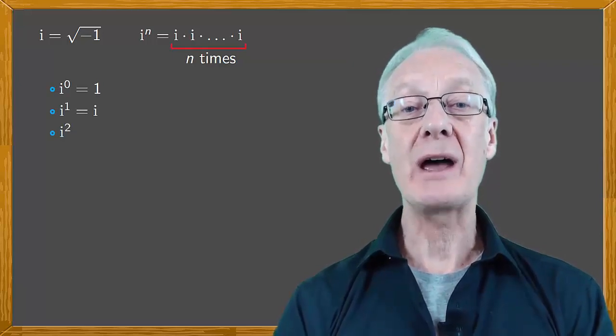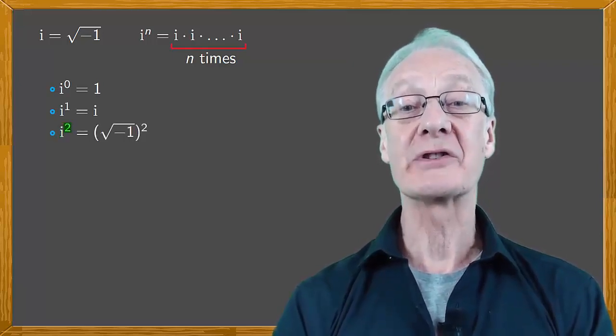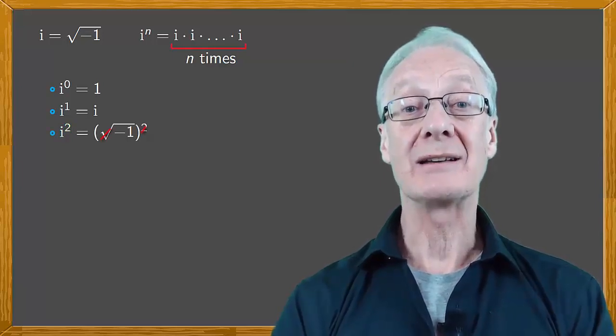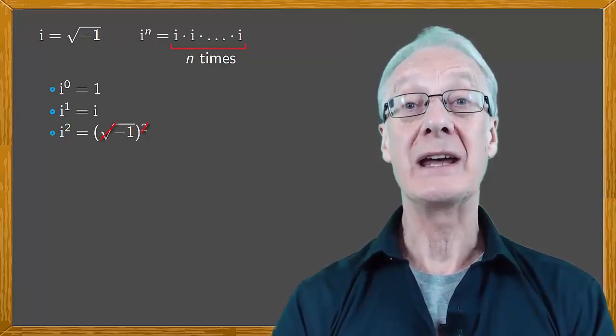Next, i squared is the square root of minus one squared. The root and the square cancel, so we obtain minus one.